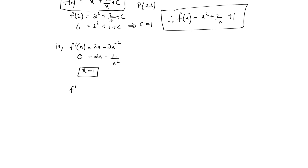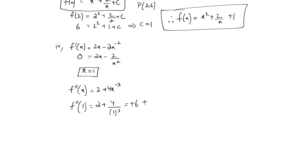Now you find the second derivative by differentiating this function again. You get 2, and the differentiation of minus 2x raised to the power of minus 2 gives plus 4x raised to the power of negative 3. Now you plug x equals 1 in the second derivative and you get a positive value. Since f double prime at 1 is greater than 0, hence the point is a minimum point.